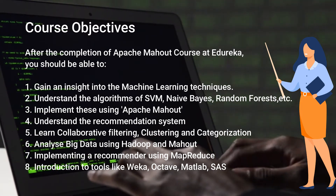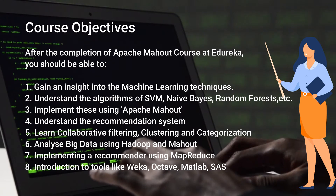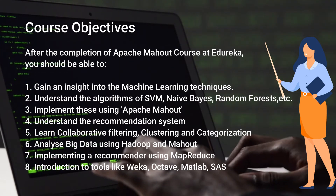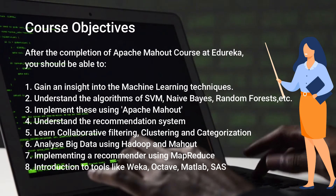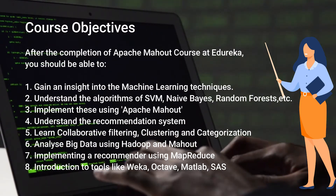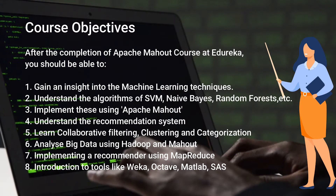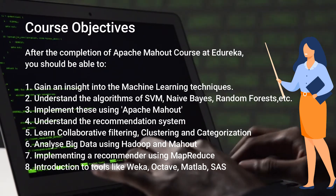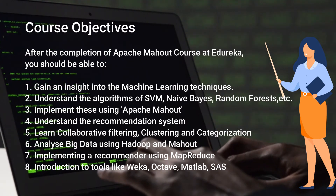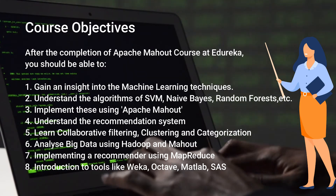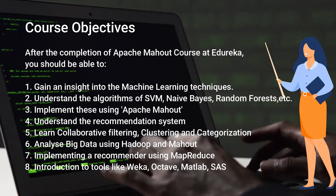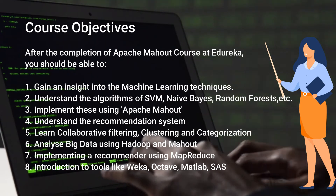Course Objectives: After the completion of the Apache Mahout course at Edureka, you should be able to: 1. Gain an insight into machine learning techniques. 2. Understand the algorithms of SVM, Naive Bayes, random forests, etc. 3. Implement these using Apache Mahout. 4. Understand the recommendation system. 5. Learn collaborative filtering, clustering and categorization.